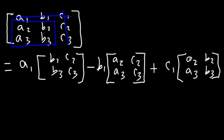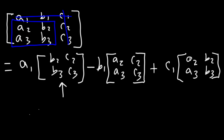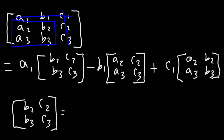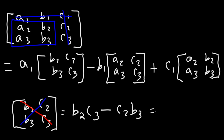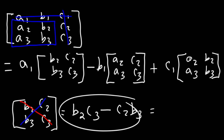Now the next thing you need to be able to do is evaluate the determinant of a 2x2 matrix. Let's focus on this one: B2, B3, C2, C3. First, we're going to multiply the first diagonal starting from the upper left — that's B2 times C3 — and then minus the second diagonal, which is C2 times B3. When you multiply, the order doesn't matter. This gives you the determinant of the 2x2 matrix, and once you get this answer, you'll replace it with that matrix.